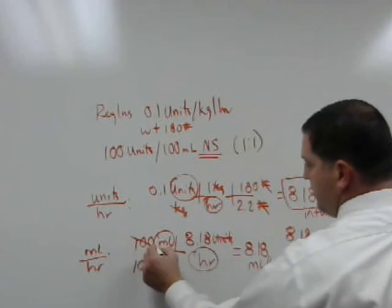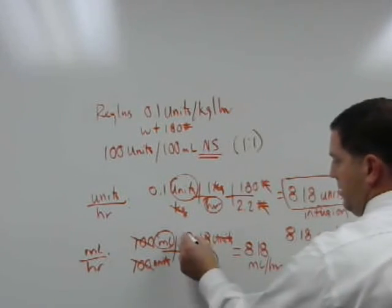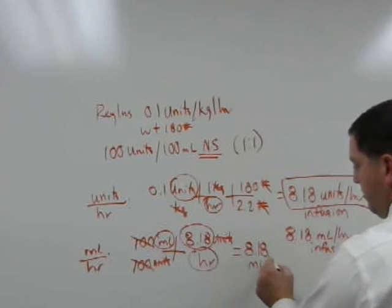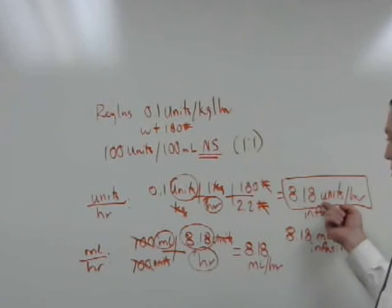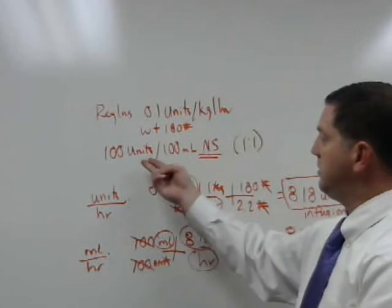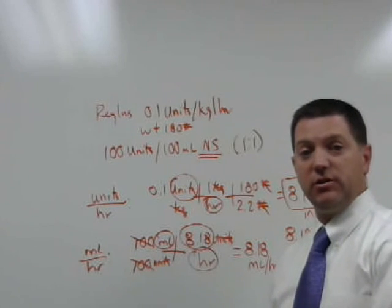I also know that I can just take and cross that out. I'm left with my 8.18, bring it over here, and that tells me that my 8.18 ml's per hour is the same as my 8.18 units per hour, which confirms that I have this one-to-one solution.